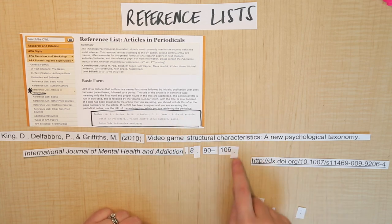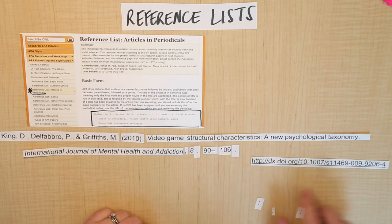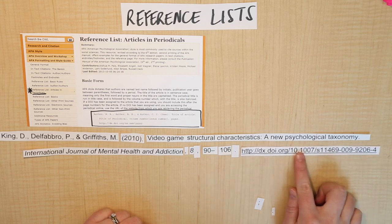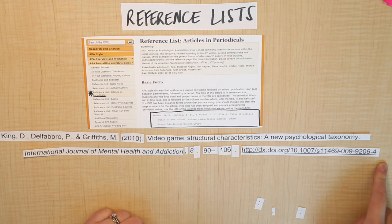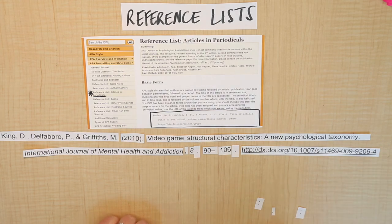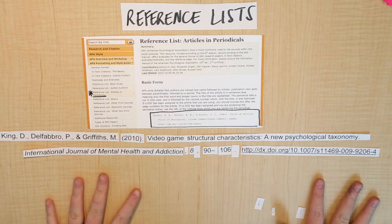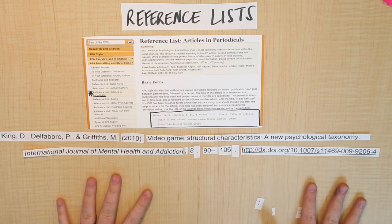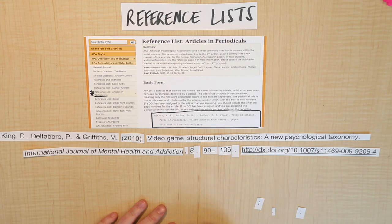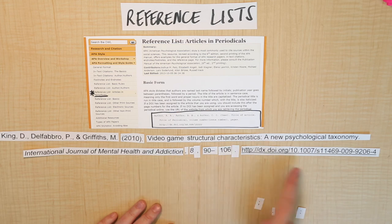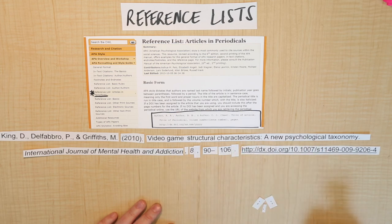I've got the comma, volume number, no issue — that's okay — another comma, and the page numbers. There's supposed to be a period after the page numbers, which I forgot to include, so I'll put that there. Then finally the DOI. In the example it does not end in a period, so we just leave it — don't put anything at the end. That's how you construct a reference list entry: go to the APA Online Writing Lab or another guide and follow it exactly, piecing together all the bits of information from the article.